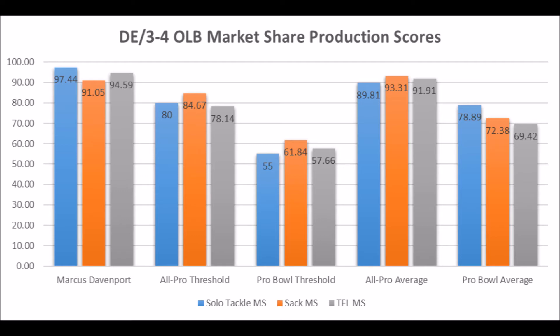It's still a very good overall profile when you look at the bottom-end thresholds for all-pro potential and the averages for all-pro and pro bowl players. Marcus Davenport is definitely within range of a potential all-pro to pro bowl player based on his production profile.